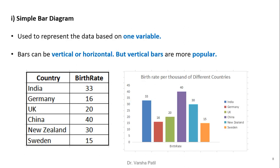A simple bar diagram is used to represent data based on one variable. Bars can be vertical or horizontal, but vertical bars are more popular. For example, a table showing countries and their birth rates is represented as a simple bar diagram with different countries on the x-axis and birth rate values on the y-axis.